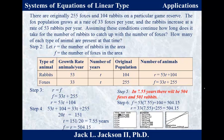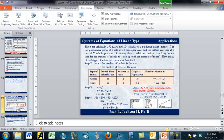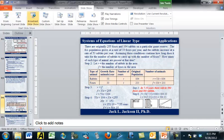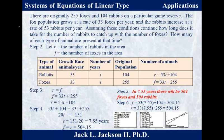That allows us to solve for T by subtracting 33T from both sides, subtracting 104 from both sides, and dividing by 20. That turns out to be 7.55 years. Plugging back in gives approximately 504 foxes and rabbits at that time. So the populations are equal at approximately 504 animals, and that happens in approximately 7.55 years.